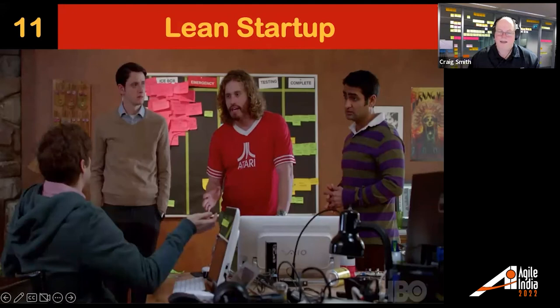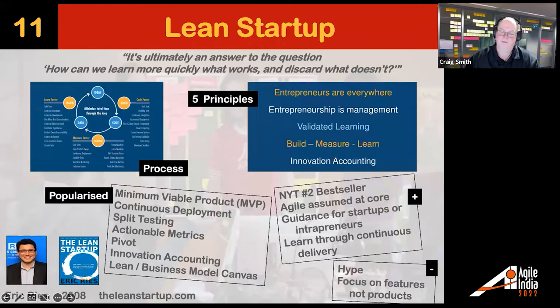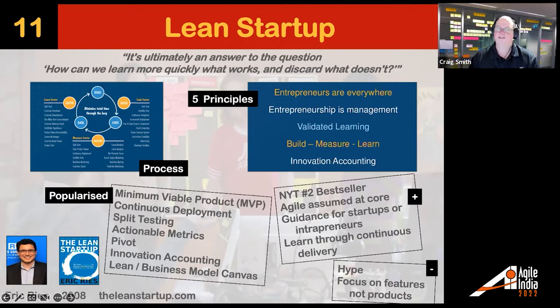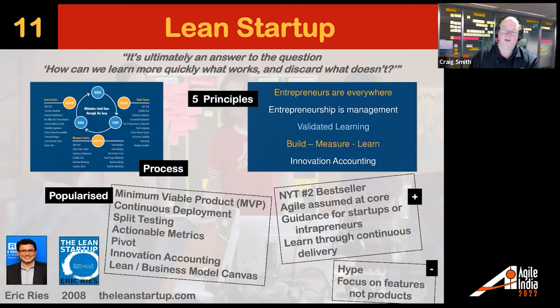Lean Startup went through a revolution, particularly in the late 2000s. When Eric Ries published it in 2008, it was a New York Times number two bestseller — no book in Agile or project management had ever done that before. It laid out how to be an entrepreneur, and even for organizations, entrepreneurship is super important. It was based on a very clear loop of build, measure, and learn — and do it quickly. The book assumed Agile at the core, saying of course you're going to be doing all basic Agile practices.